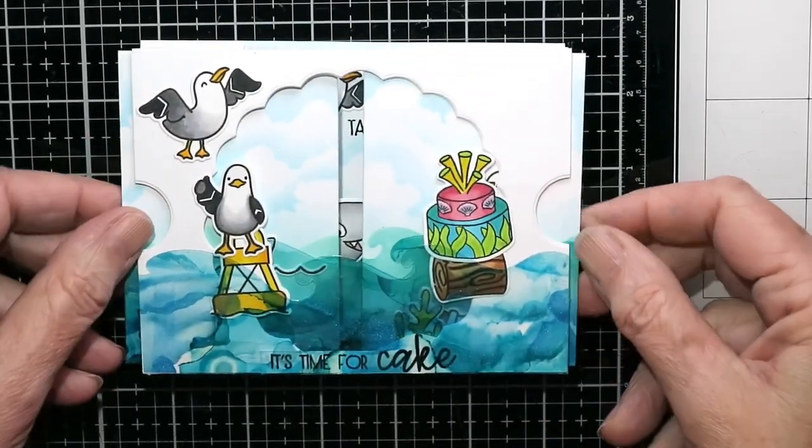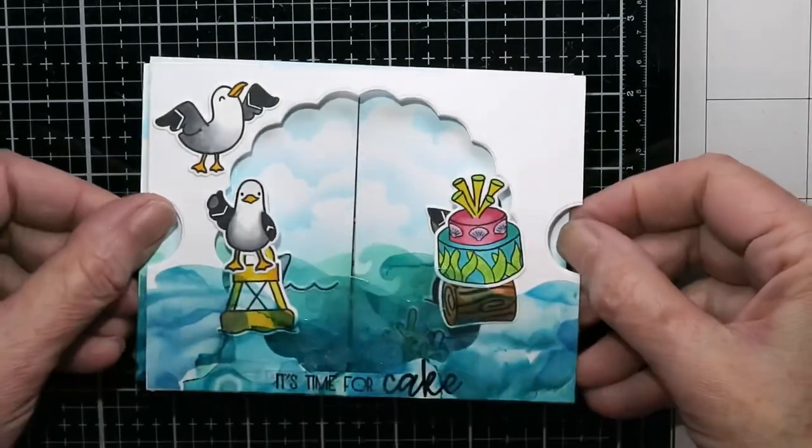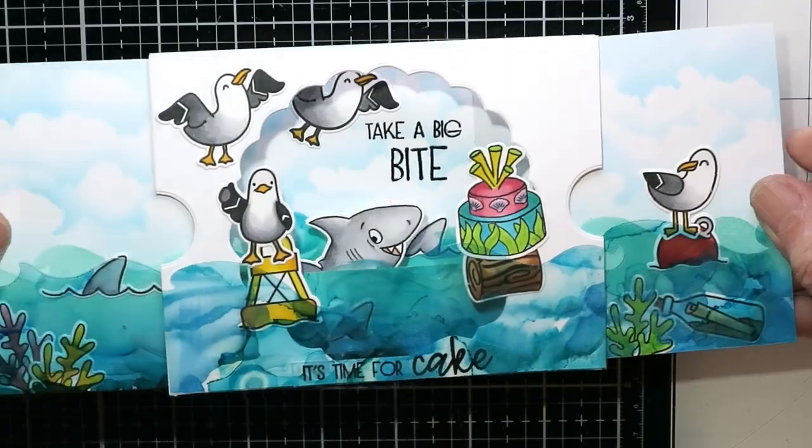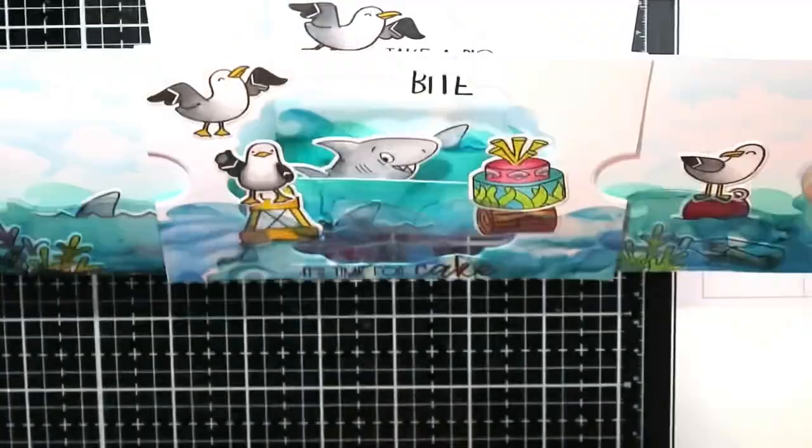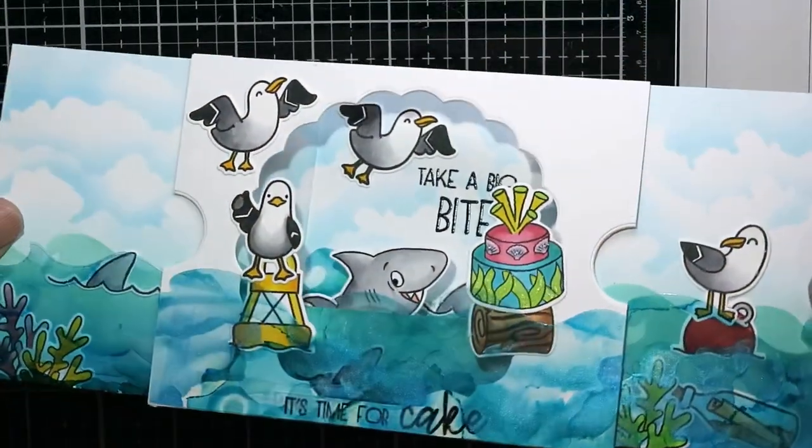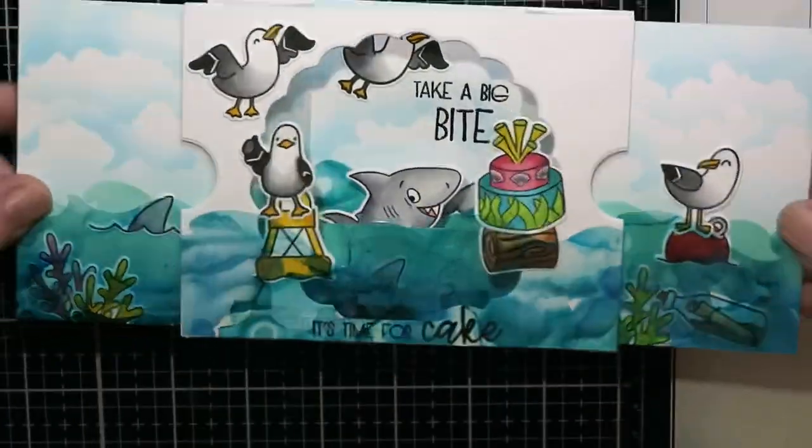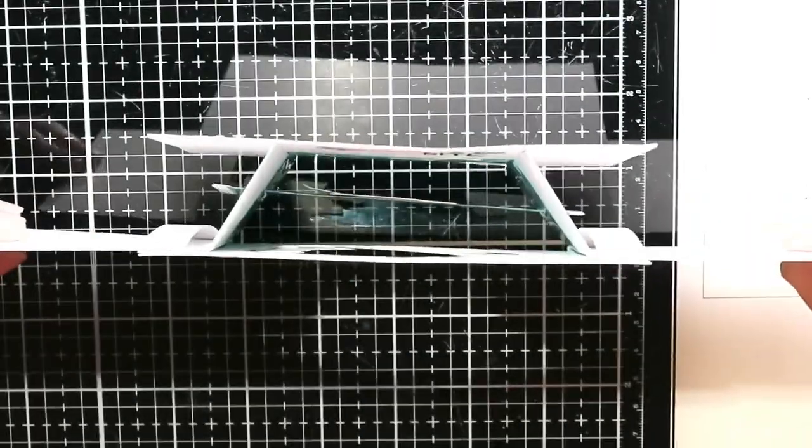So there, it still doesn't quite close. That really bugs me. There, when you open it up, lots to see, lots of depth in there. And in real life, that laminating pouch really makes a difference because it looks like there's so many layers to the ocean.